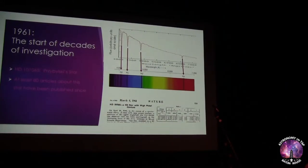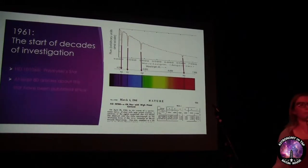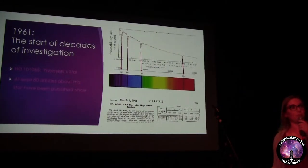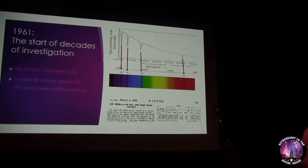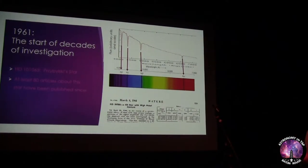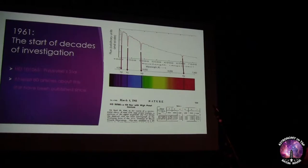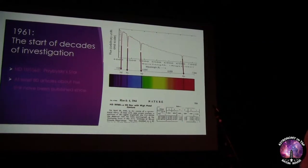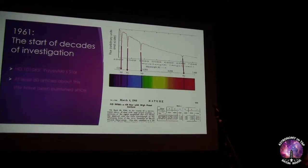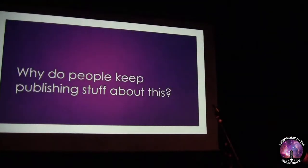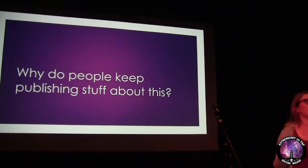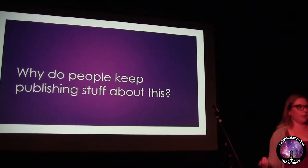He ended up publishing a paper on this star, which is called HD 101065, but in the years since it has come to be known as Chbilsky's star — because people can't figure out what's going on. There have been almost 80 publications or more since 1961 when he first published about this star.